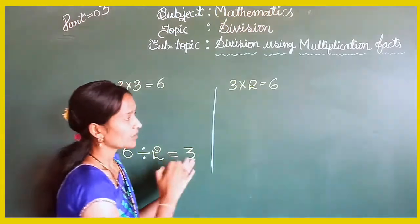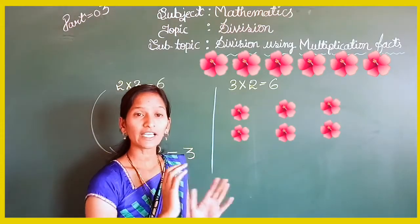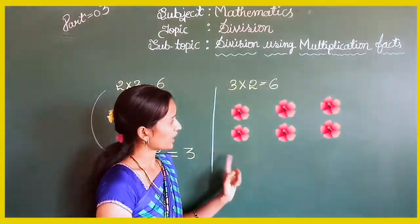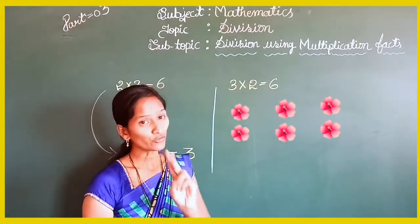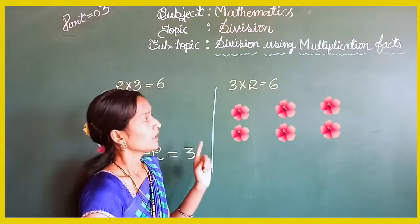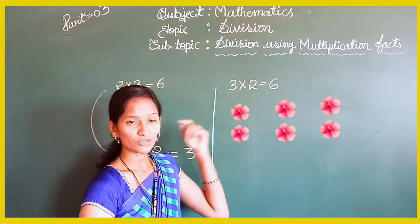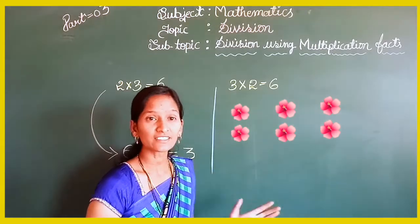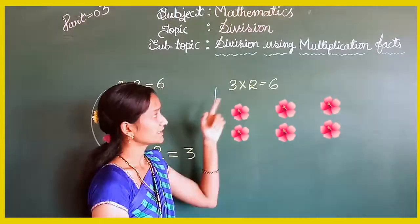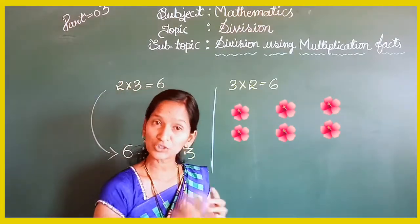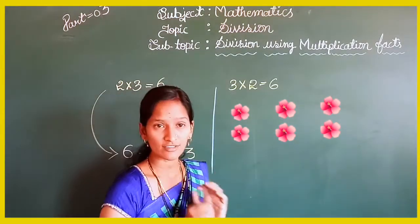It becomes 3 into 2, and the product is the same. Here are also 6 flowers, but they are arranged in 3 groups, with 2 flowers in each group. So how can you write this as a multiplication fact? It is 3 into 2 equals 6 — where 3 is the number of groups, 2 is the number of flowers in each group, and 6 is the total number of flowers.